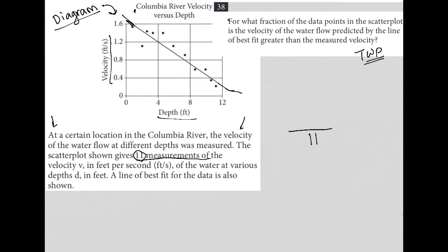For what fraction of the data points in the scatter plot is the velocity of the water flow predicted by the line of best fit greater than the measured? So where basically is the line higher than the actual points? Where does that happen?